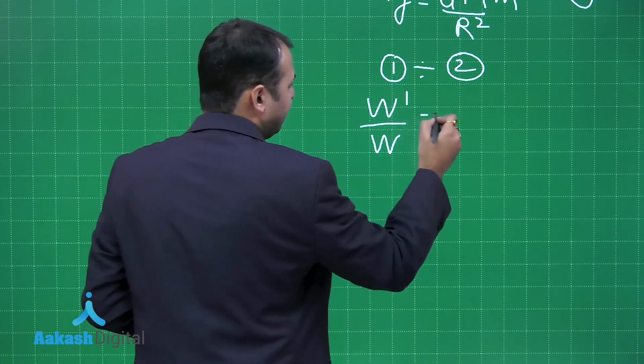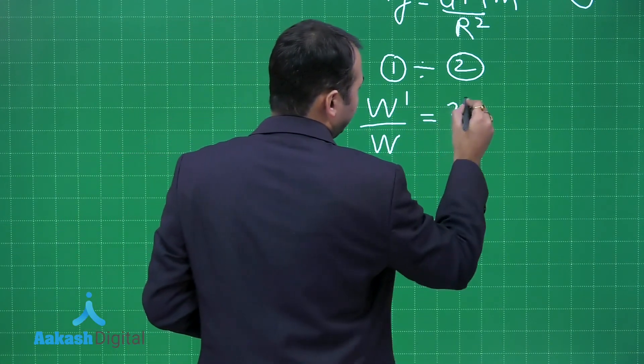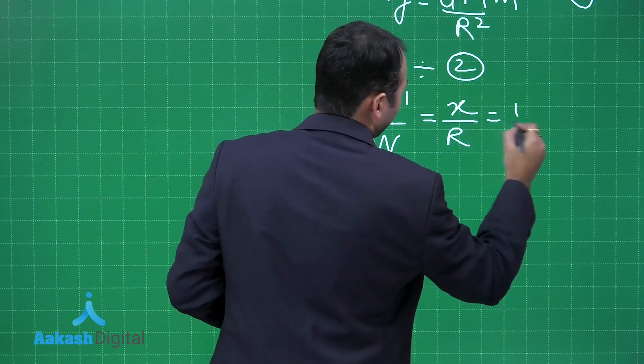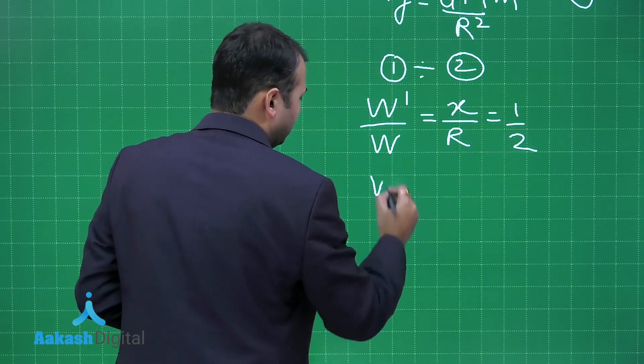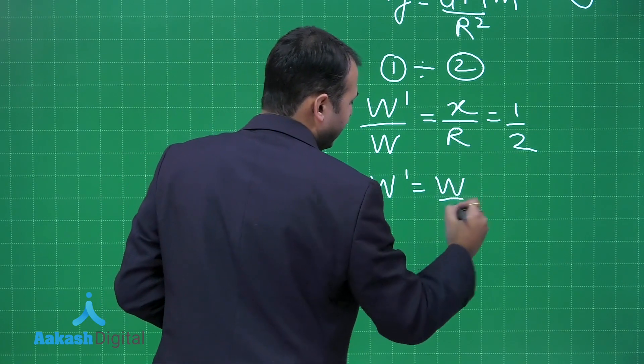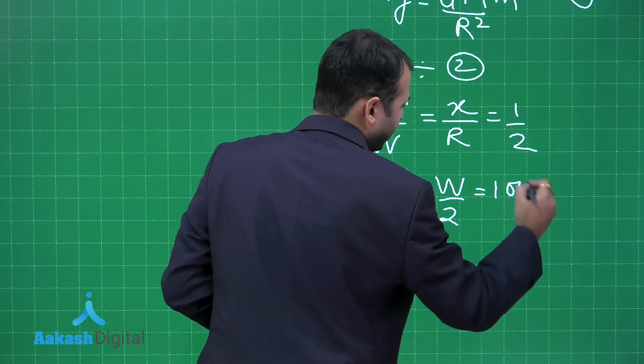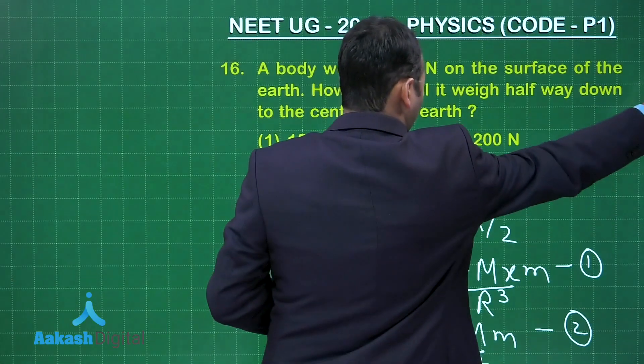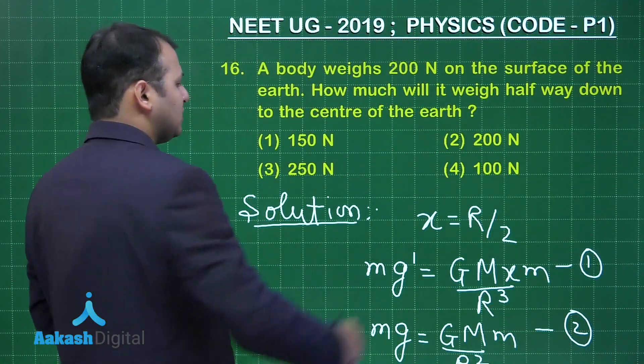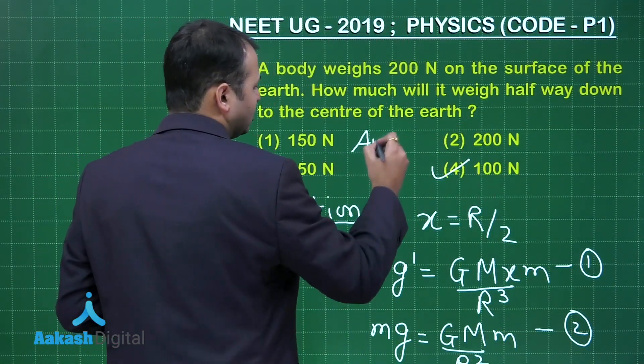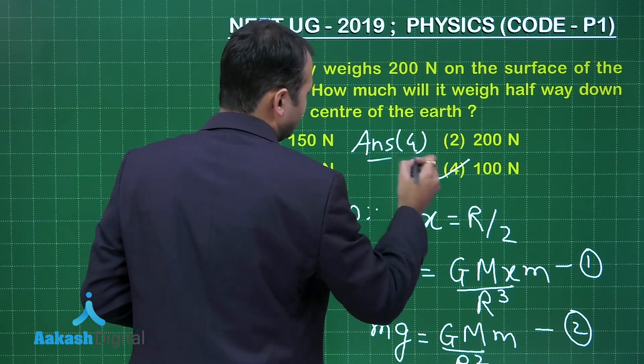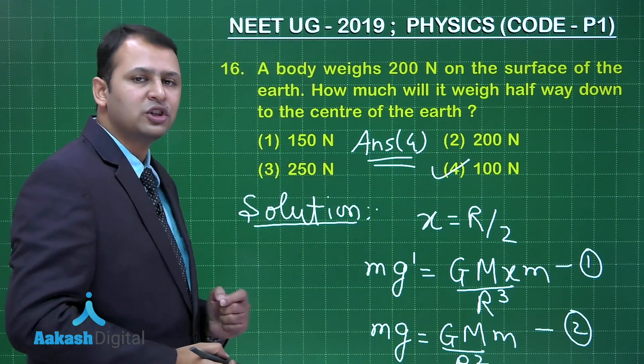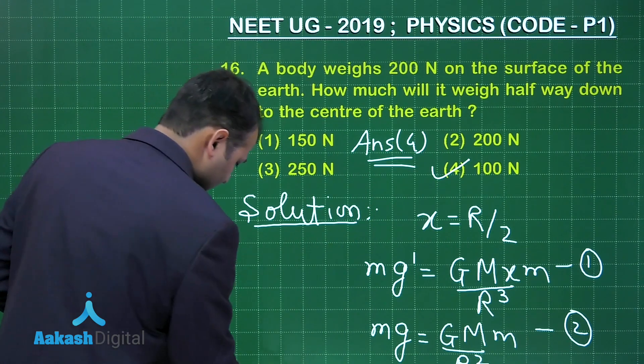This will be X upon R, that would be 1 is to 2. So W dash will be equals to W by 2, which is equals to 100 Newton. Let's see which is the best suited option. Among the four options given to us, option number 4 is the right answer to this question. Now let's move on to the next question, that is question number 17.